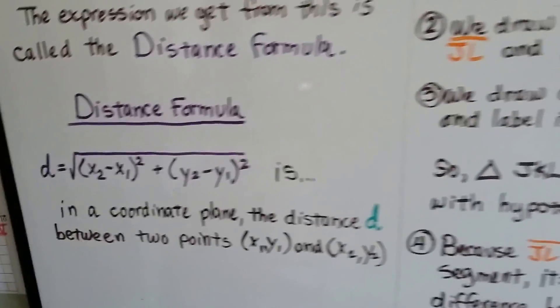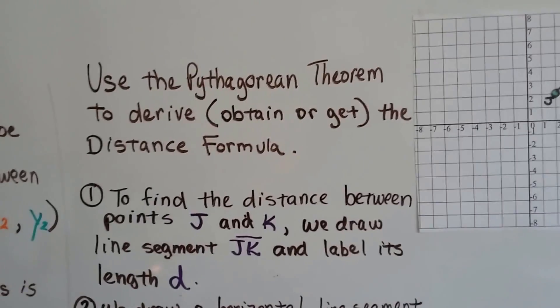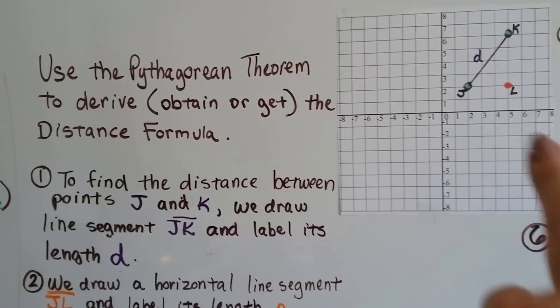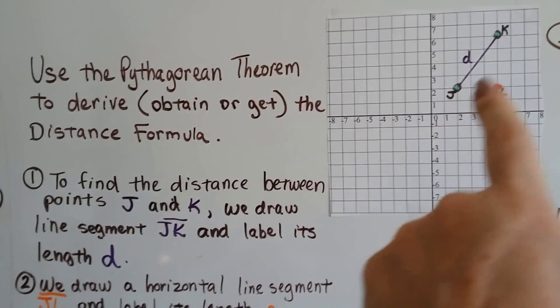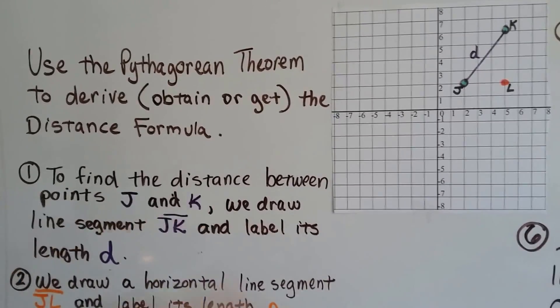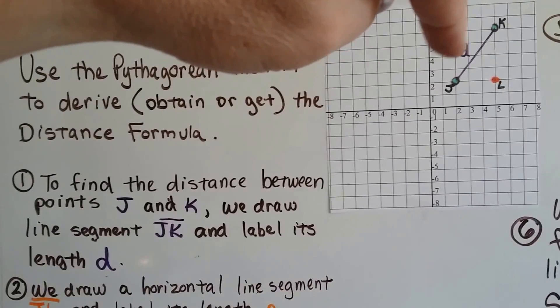So let's see how we're going to do this. We use the Pythagorean Theorem to derive, that means obtain or get, the distance formula. So the first thing we need to do is, if we've got two points right here, j and k, to find the distance between points j and k, we just draw a little line segment right here, and we label its length d.